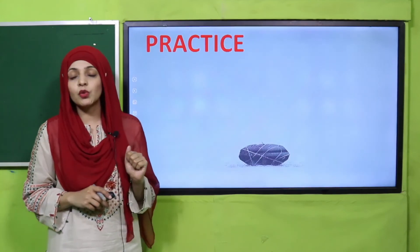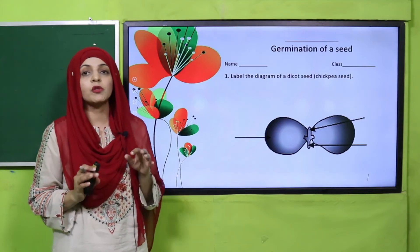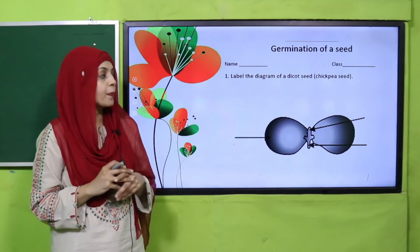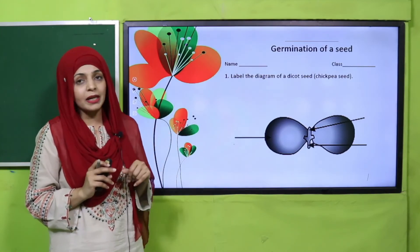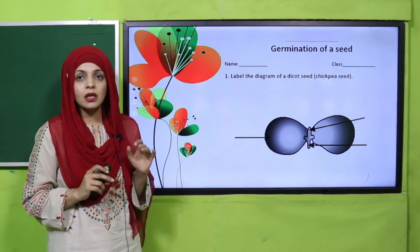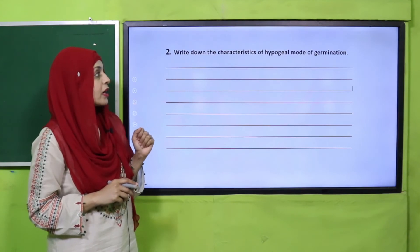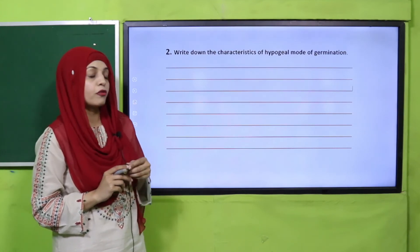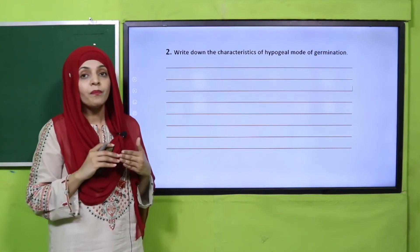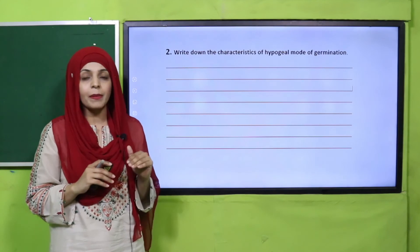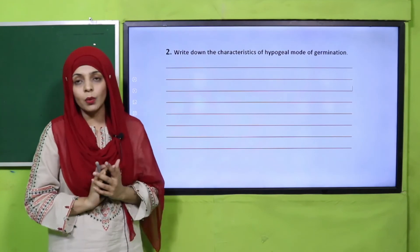For practice, you will download the worksheet from the description box below this video, or get it in print form from your teacher. You will label the different parts of a dicot chickpea seed and write down the characteristics of the hypogeal mode of germination. You can take help from the book, but try to write it in your own words. Pause the video and complete the worksheet.